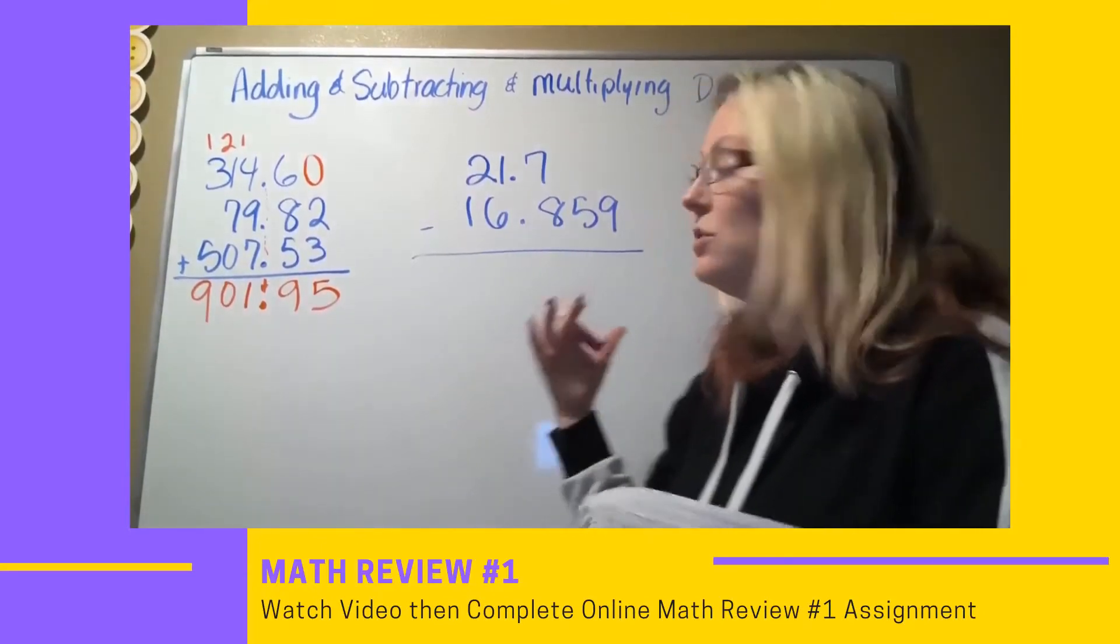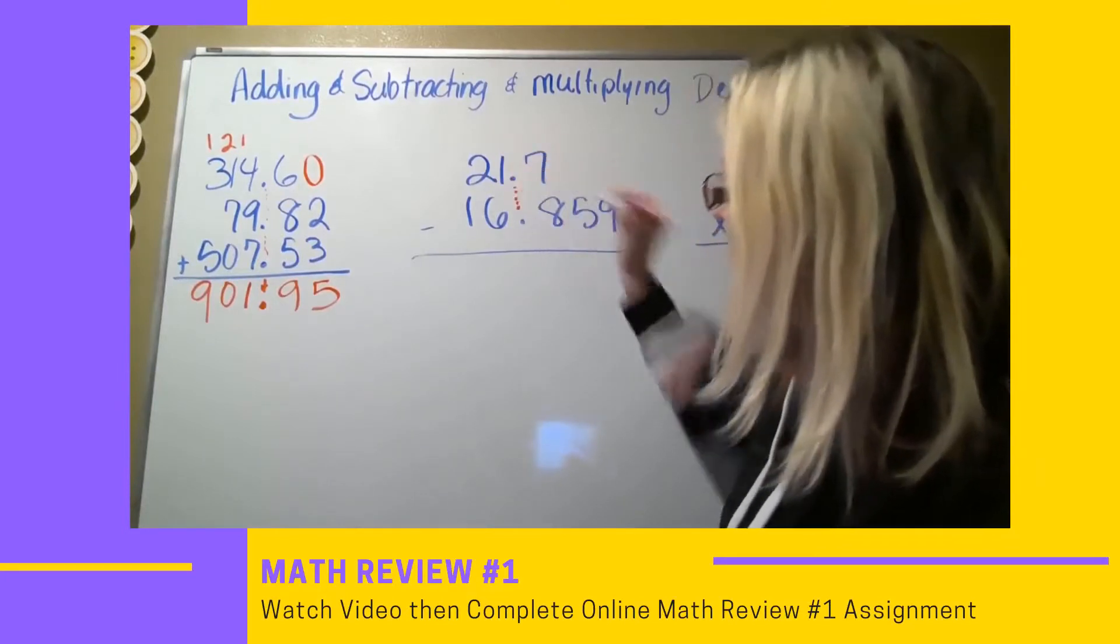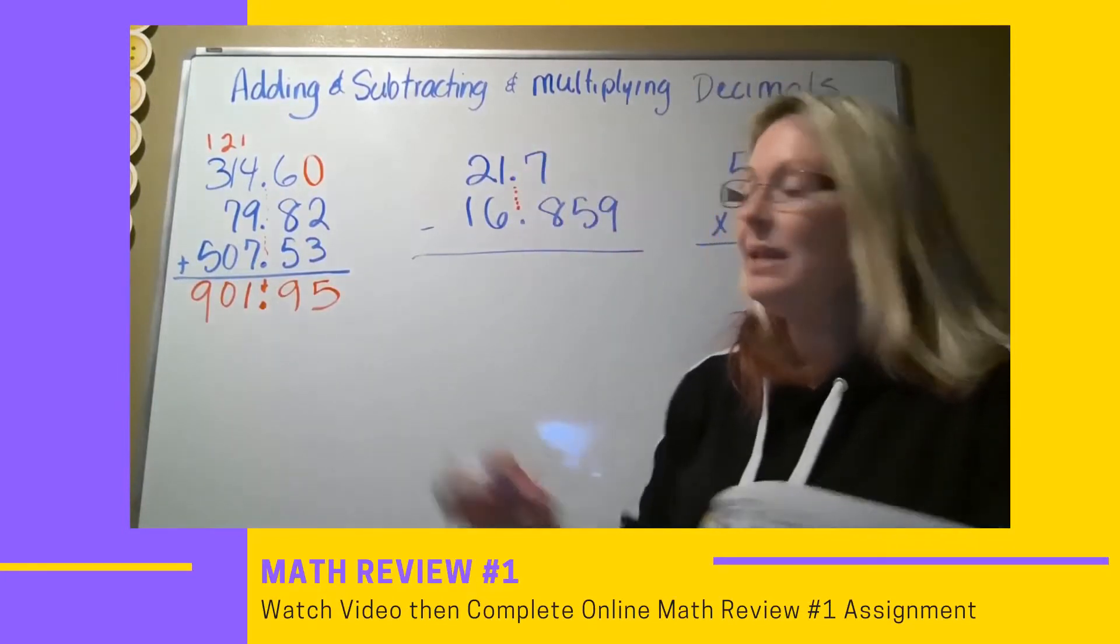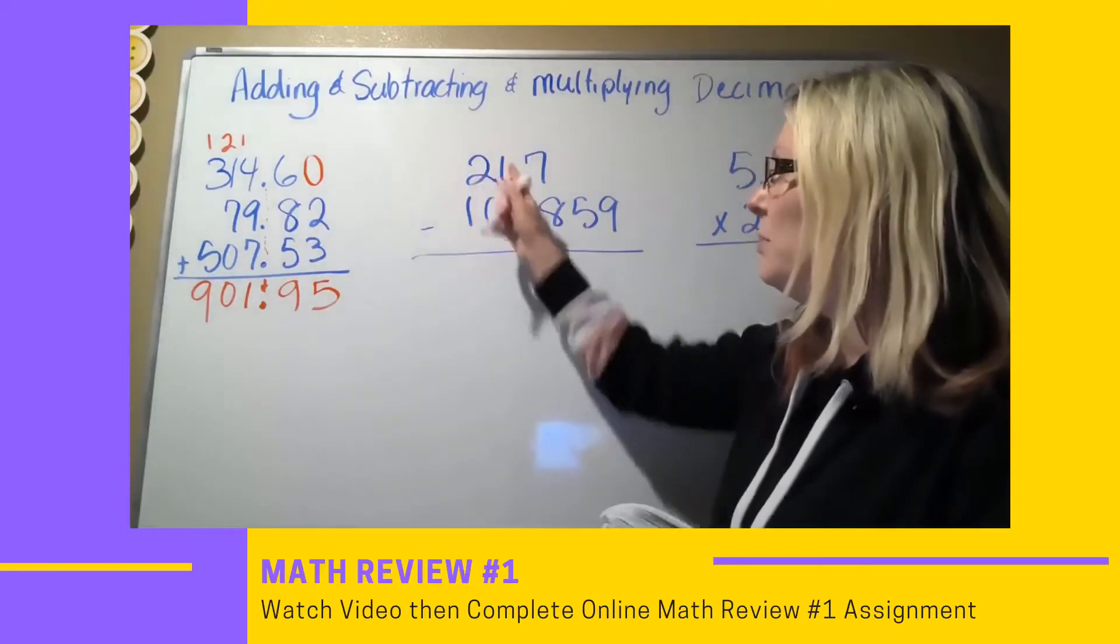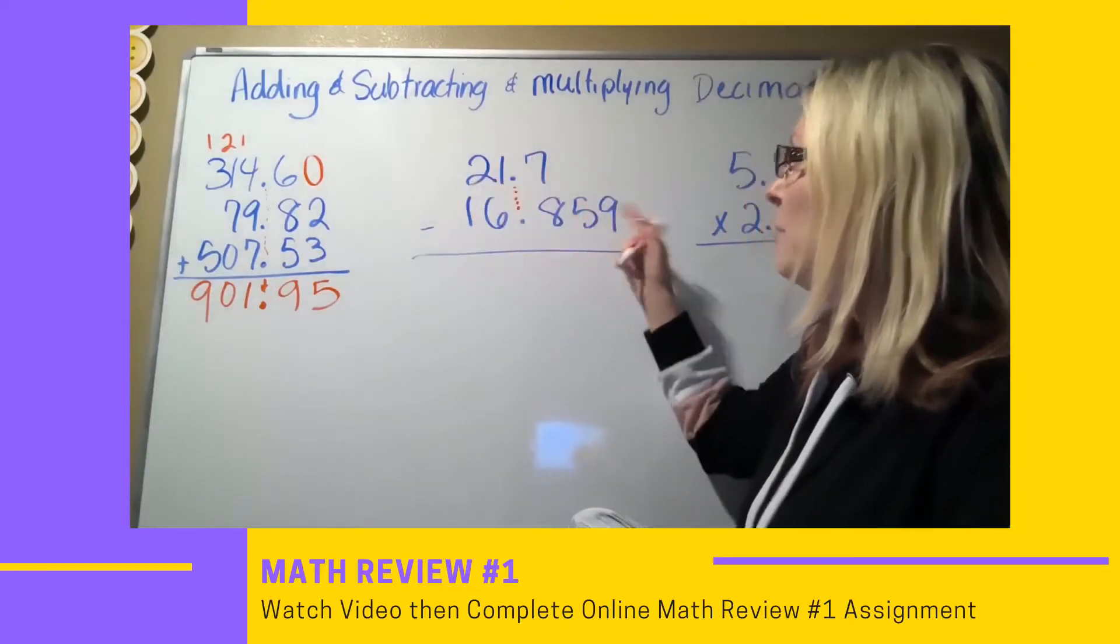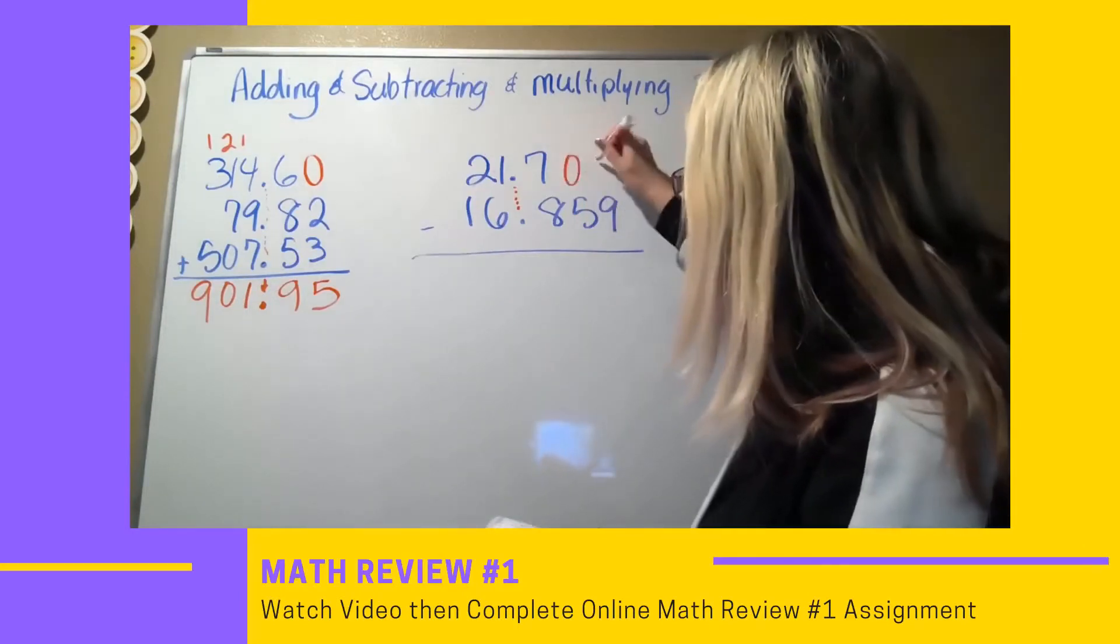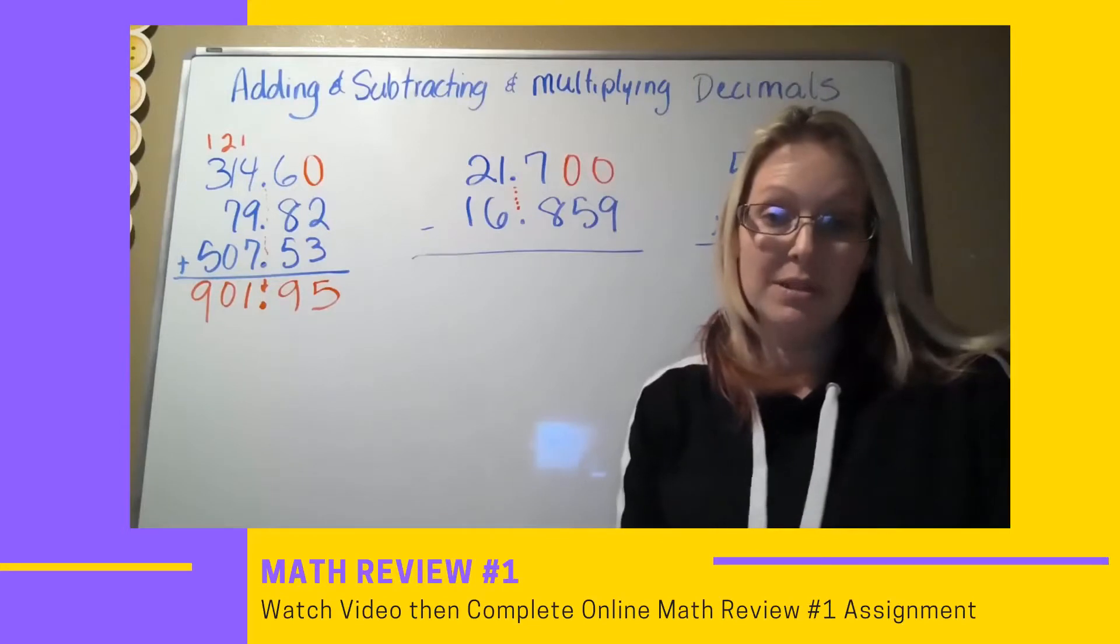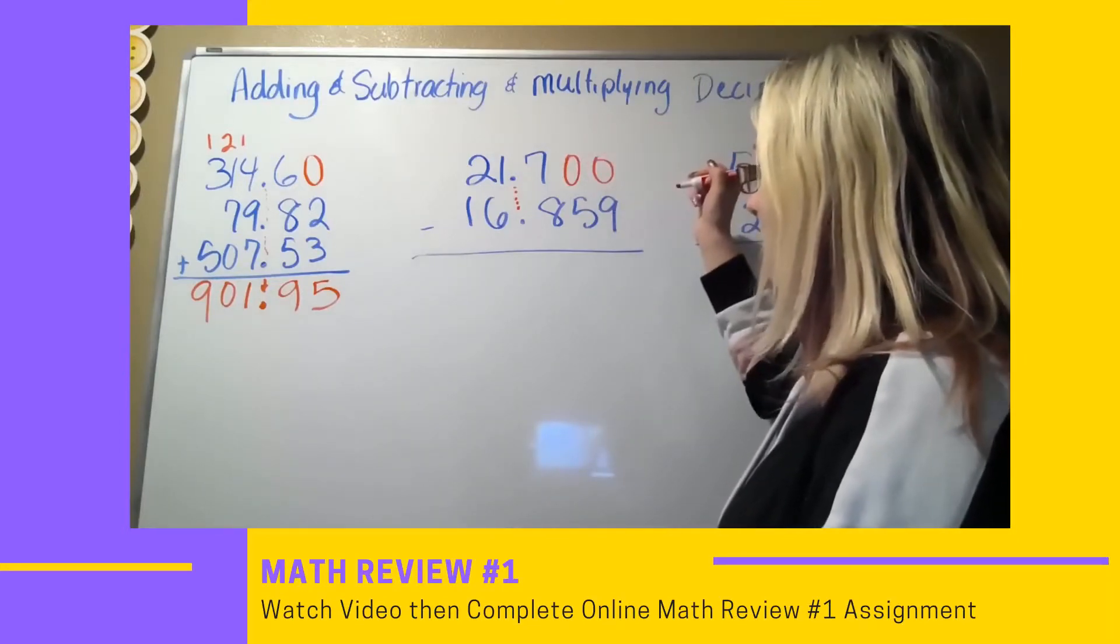Now, going on to subtraction of decimals. Same thing. You have to have the decimals lined up. They need to be in line with one another. That way, all of the place values are lined up. But as you can see, I'm missing two place values. So I would add in my two zeros. Then I may go ahead and subtract by borrowing.